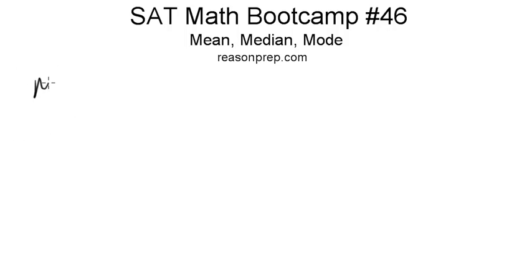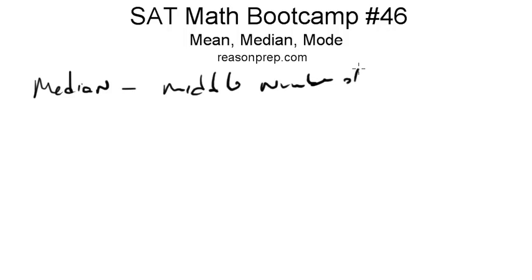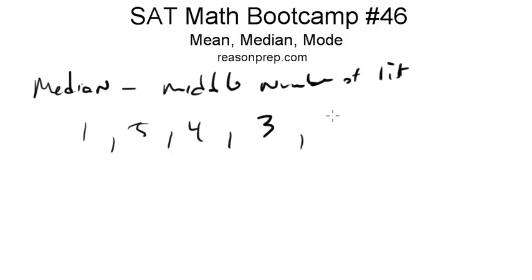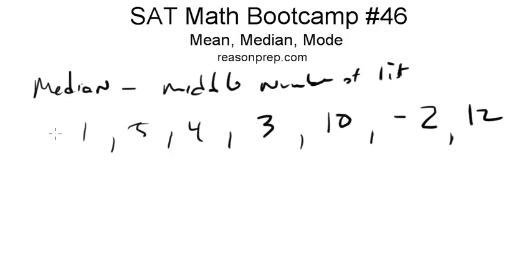The median is simply the middle number of a list. So let's say we have this list: 1, 5, 4, 3, 10, negative 2, and 12, and we want to find the median of it. The first thing we need to do is put them in order, in ascending order.